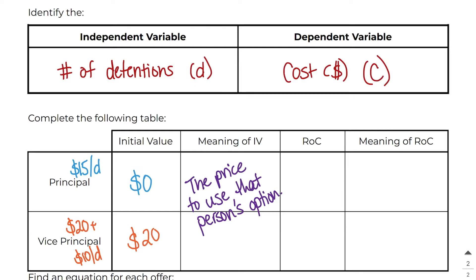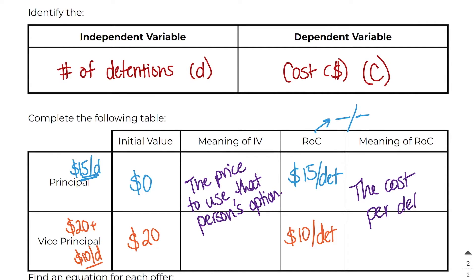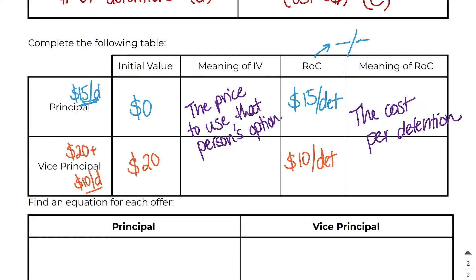With the principal's option you don't pay anything upfront but more per detention. With the vice principal you pay $20 upfront but less per detention. The rate of change is always something per something. The principal's rate of change is $15 per detention and the vice principal's rate of change is $10 per detention. The rate of change simply tells us the cost per detention.